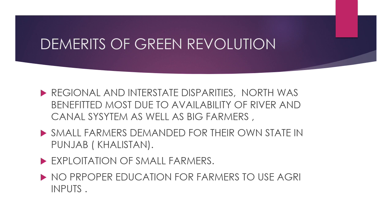Small farmers in Punjab demanded a separate state — Khalistan — because they could not afford the new technologies. They lacked professional knowledge to properly use these technologies, leading to poor results for them.